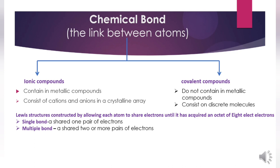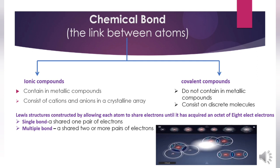Compounds that do not contain a metallic element typically form covalent compounds consisting of discrete molecules. The bonds between the atoms of a molecule are covalent, meaning they consist of shared pairs of electrons. Lewis structures are constructed by allowing each atom to share electrons until it has acquired an octet of 8 electrons. A single bond means one shared pair of electrons; a multiple bond means two or more shared pairs.